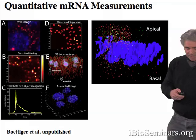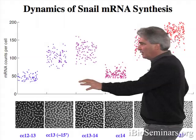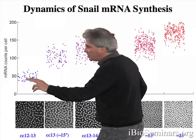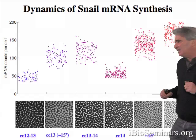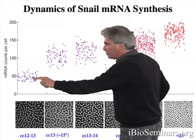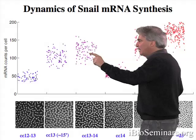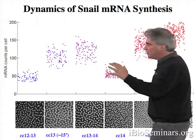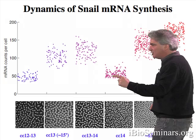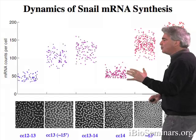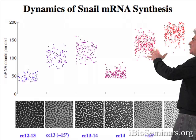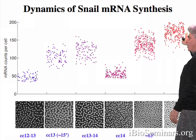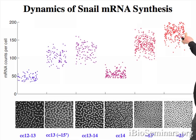The next slide shows some of the actual numbers. Each dot represents the snail mRNA count in a given cell at a given stage. At the beginning of nuclear cleavage cycle 13, there is an average of 50 snail mRNAs per cell, and this number rises to 120 mRNAs per cell during the 15-minute interphase period of nuclear cleavage cycle 13. Then the cell divides and you go from an average of 120 mRNAs per cell down to 60 mRNAs per cell at the beginning of nuclear cleavage cycle 14, and then during the next 25 minutes this number rises to its steady state level of 180 mRNAs per cell.